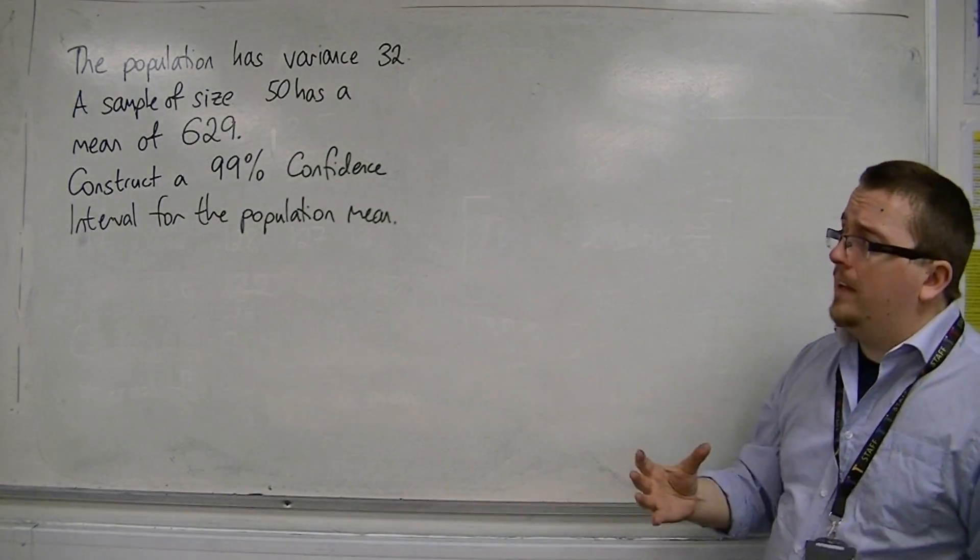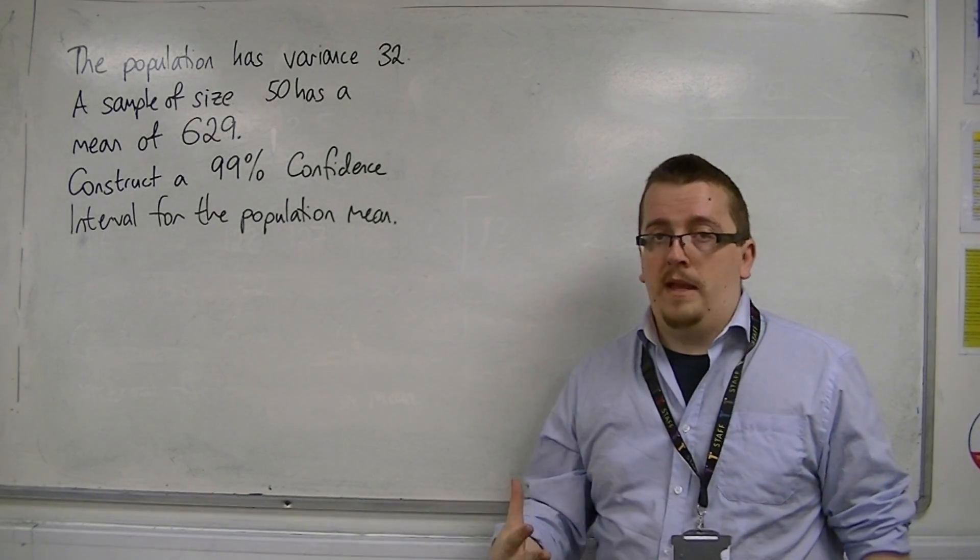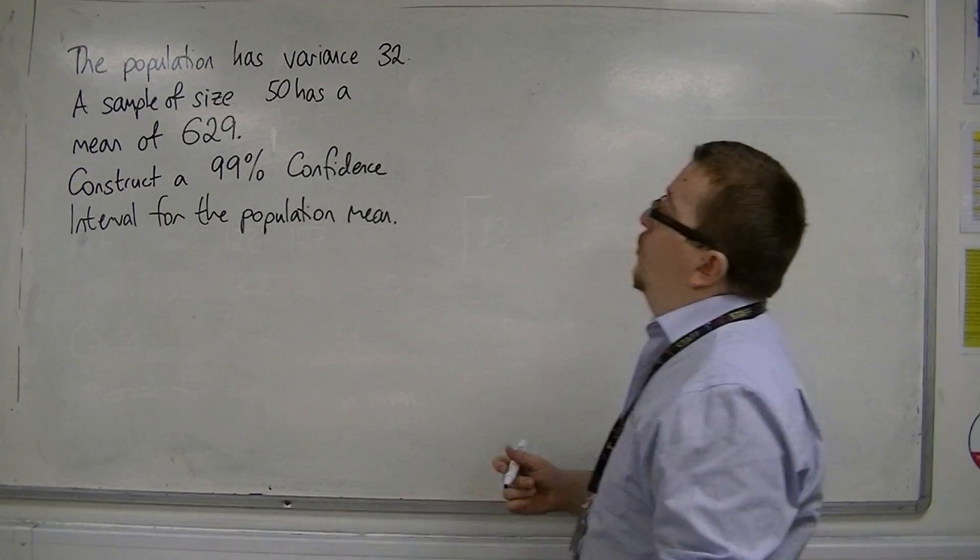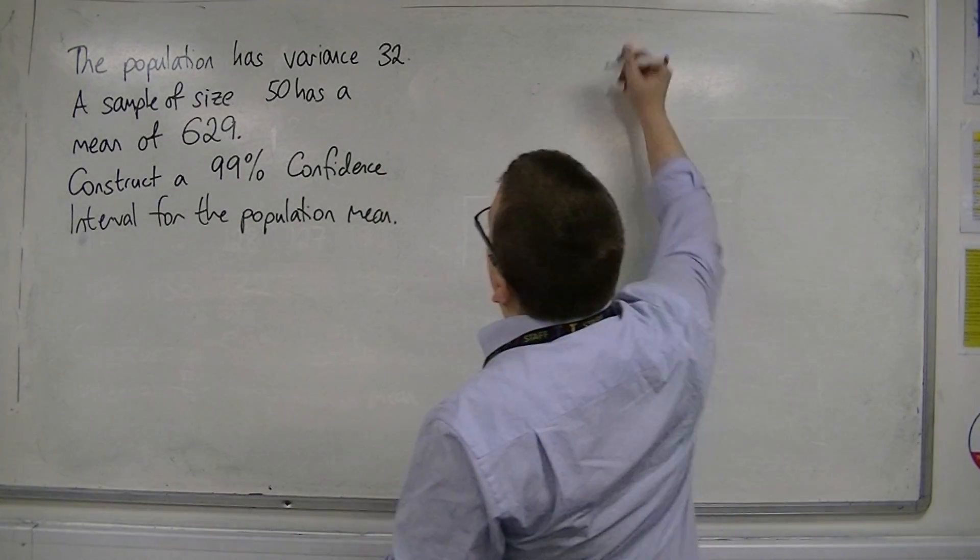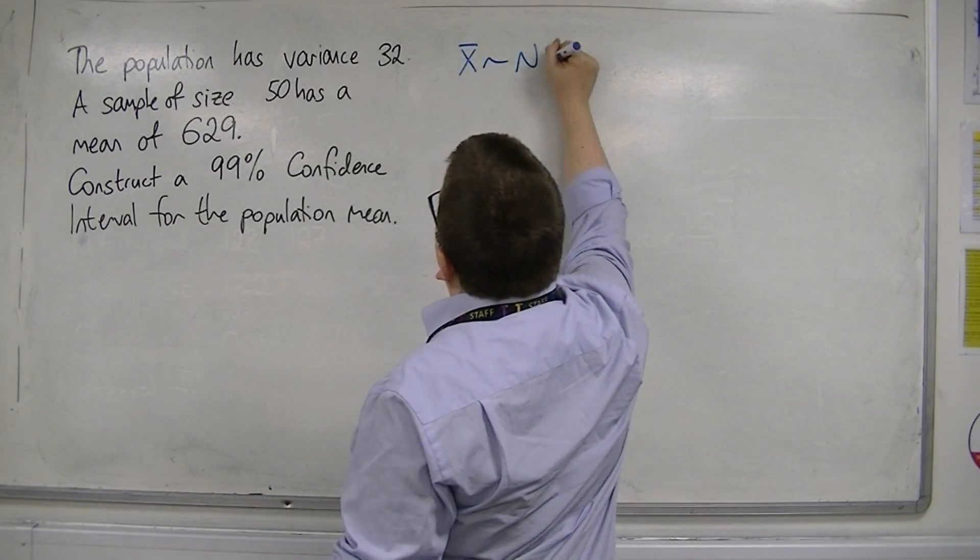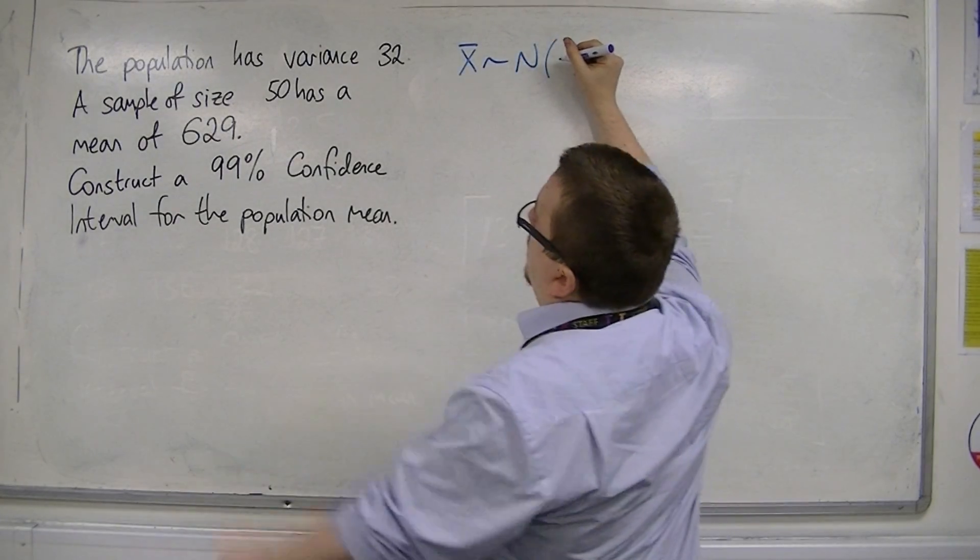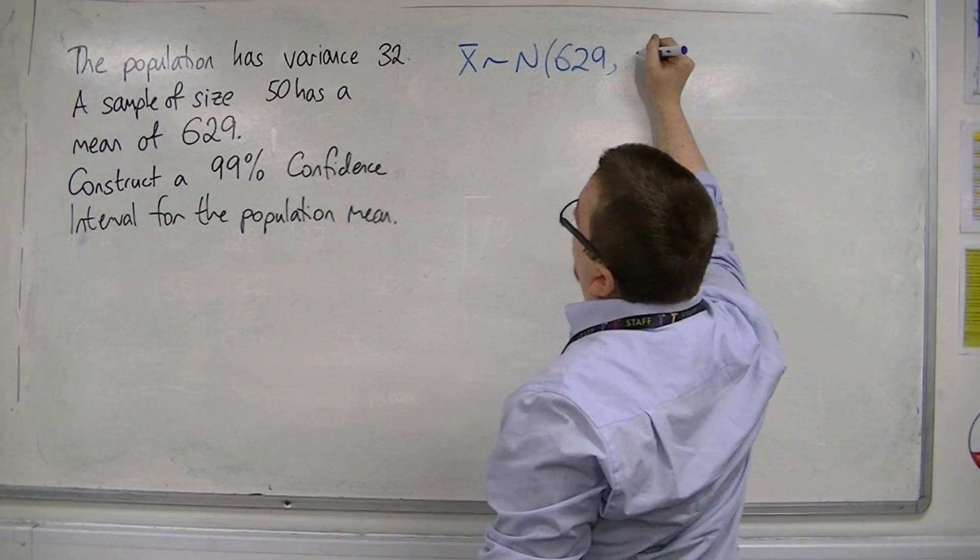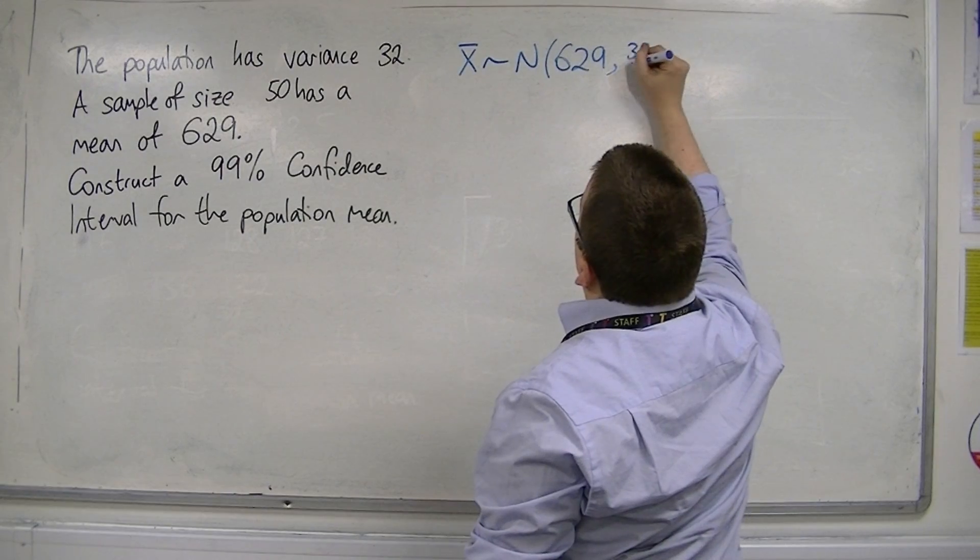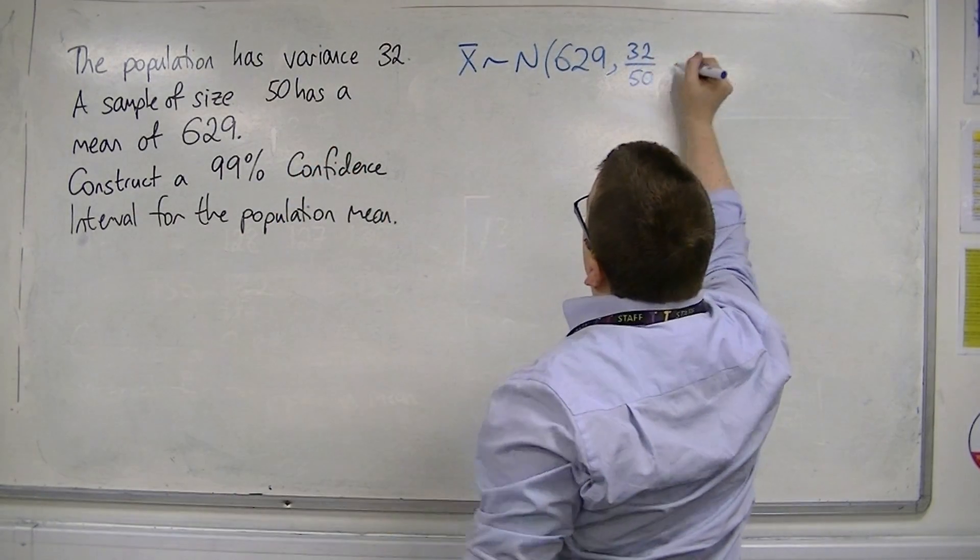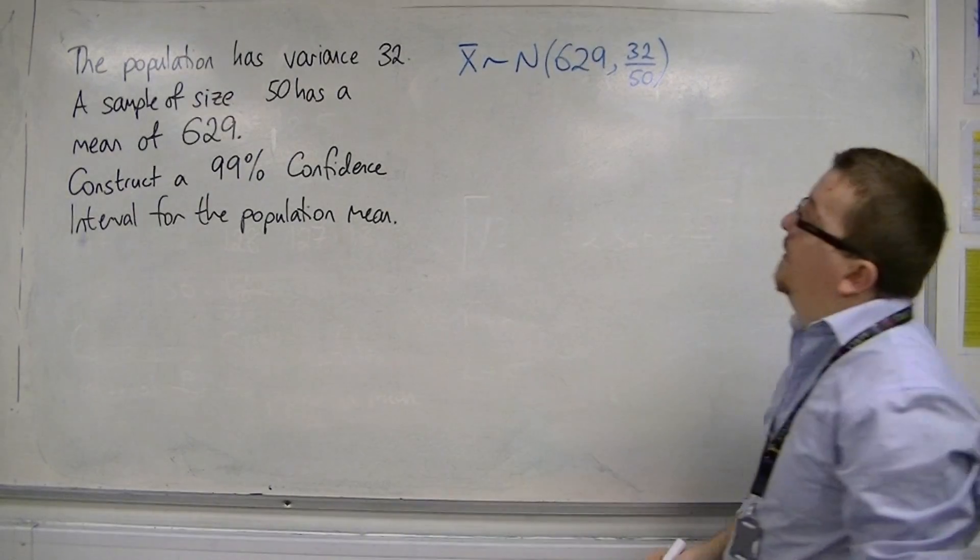That's telling us that the sample means will be normally distributed. So, what we're saying here is that the sample means will be normally distributed with a mean of 629 and a variance of 32 over 50.